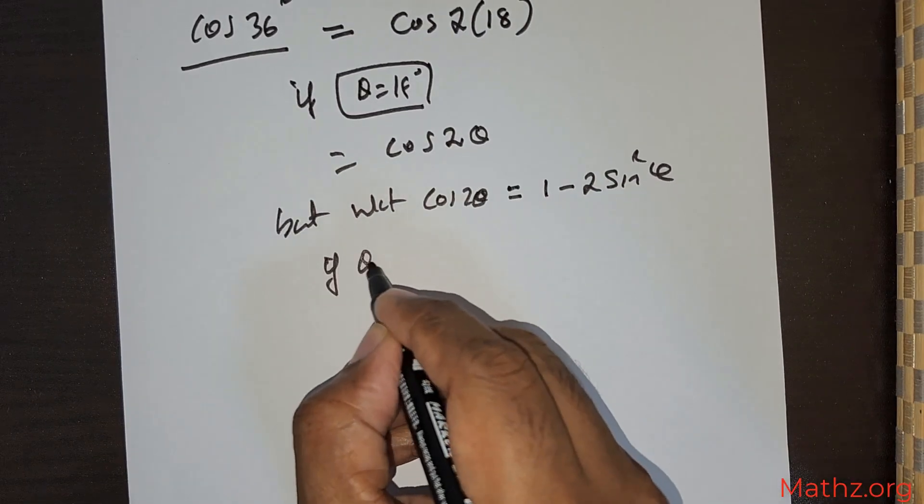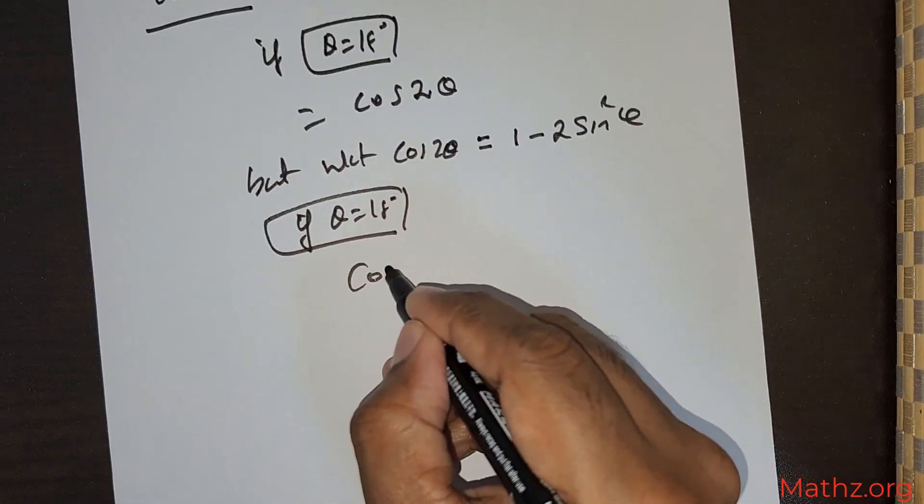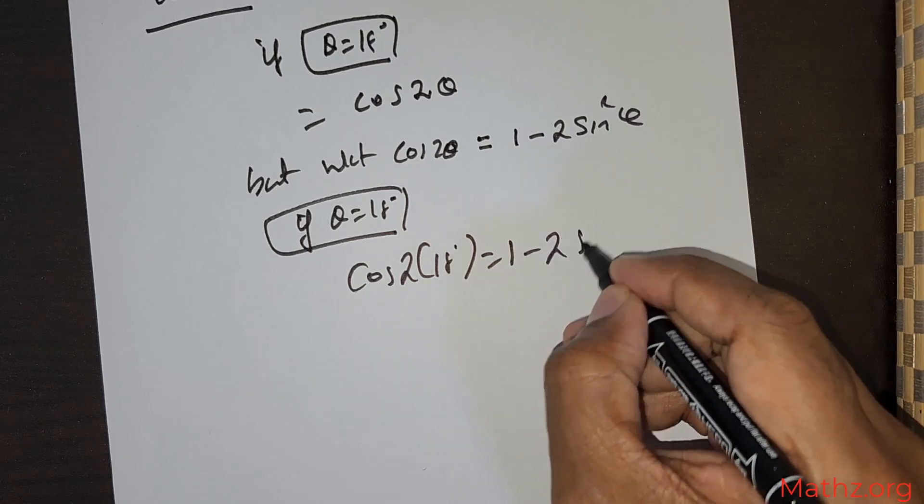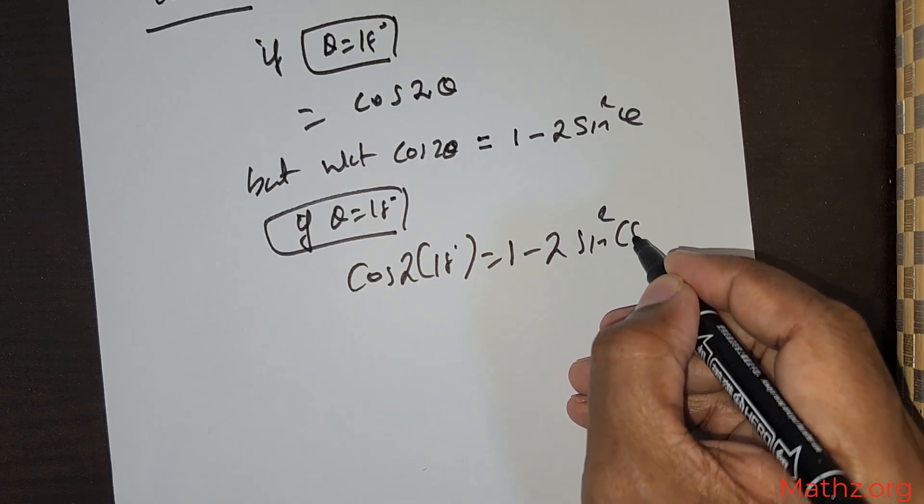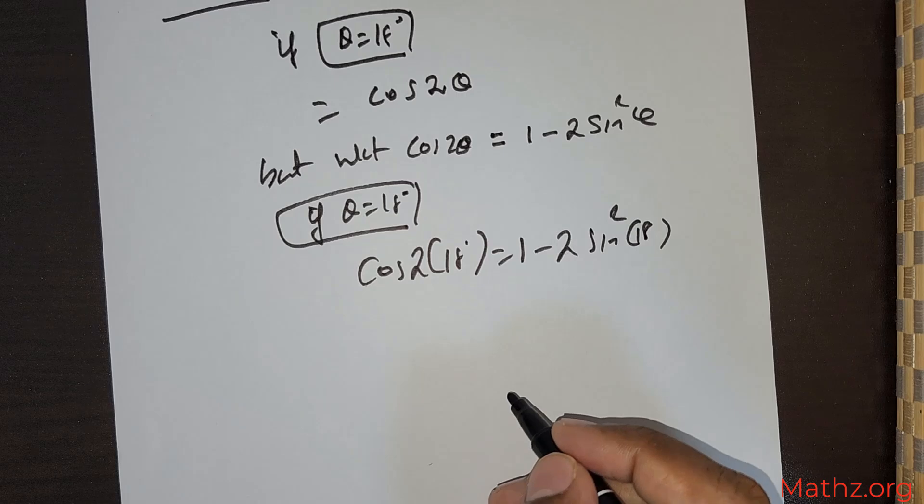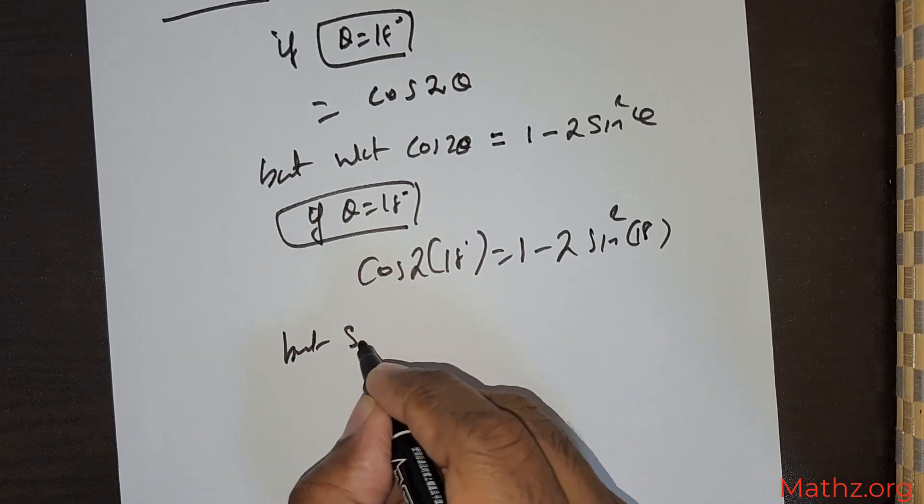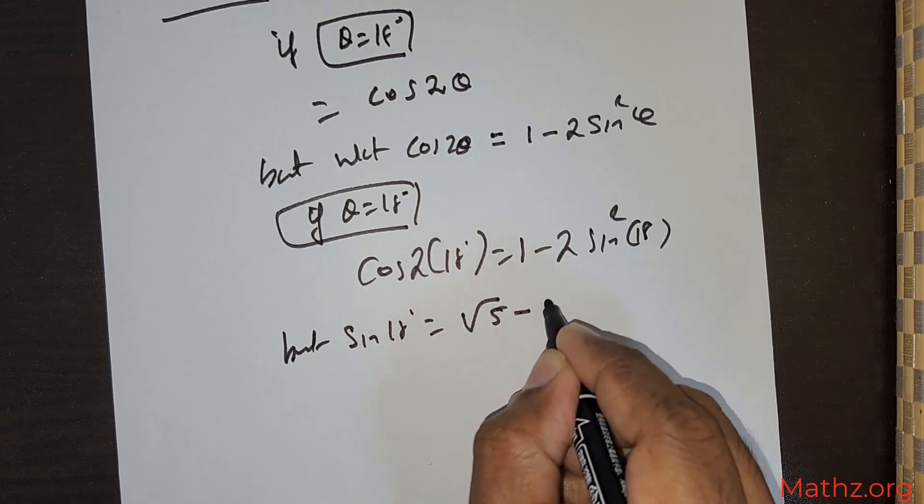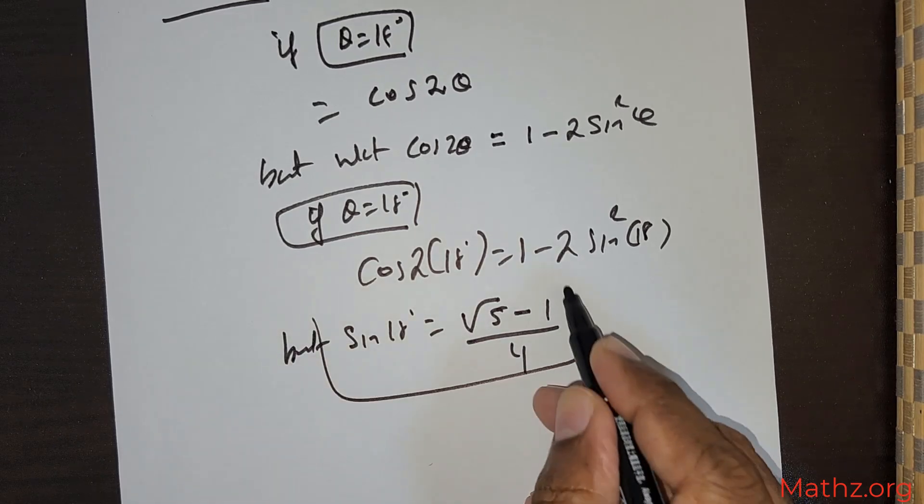So if θ = 18°, then cos 2(18°) = 1 - 2sin²(18°). But we also know that sin 18° = (√5 - 1)/4. I already showed you this.